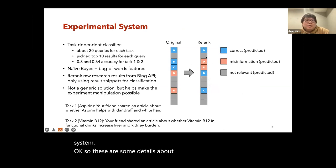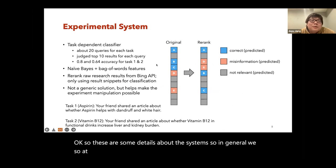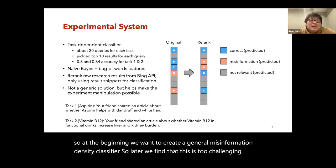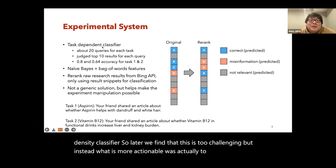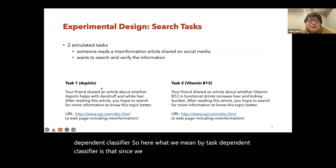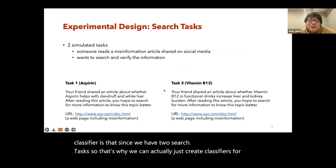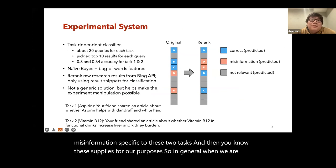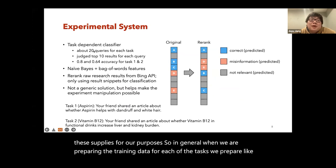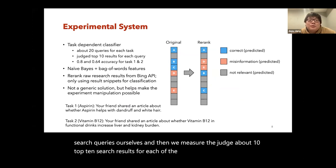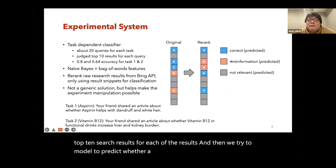Regarding system details: we initially wanted to create a general misinformation density classifier, but found this was a true challenge. Instead, what was more actionable was to create task-dependent classifiers — since we had two tasks, we created classifiers for misinformation specific to those two tasks. For preparing training data, we prepared about 20 search queries ourselves, manually judged the top 10 search results for each query, and then trained a model to predict whether a search result is correct information, misinformation, or not relevant.